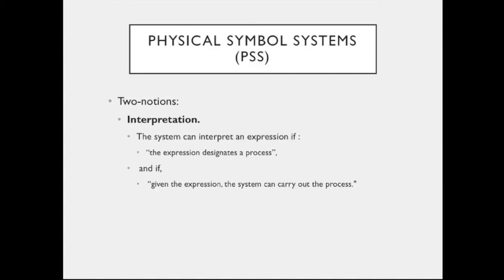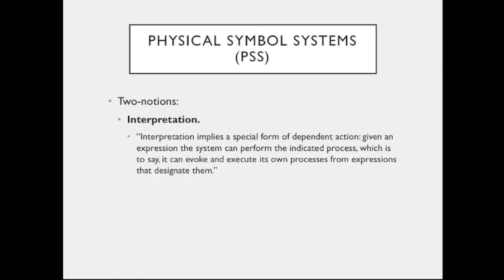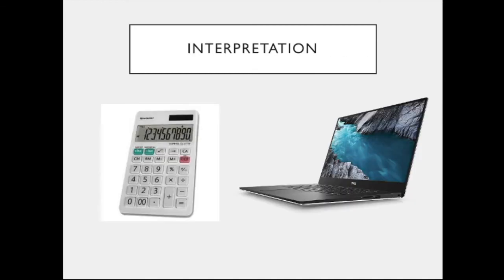Furthermore, the system can interpret an expression if the expression designates a process, and if given the expression, the system can carry out the process. Suppose that you needed to perform some tedious arithmetical operation, such as dividing two large numbers. You could use a pocket calculator, or you could use the software in your laptop. The calculator is a special-purpose computer — it can only perform one very restricted set of operations on numbers.